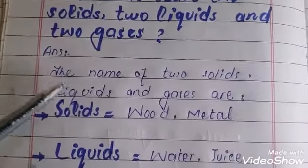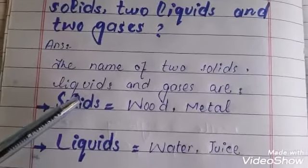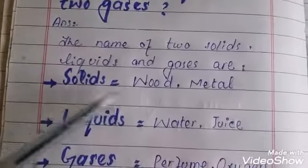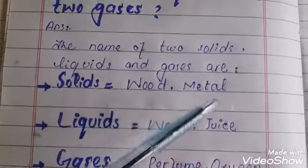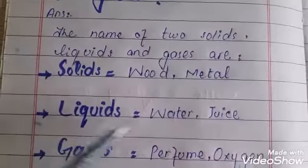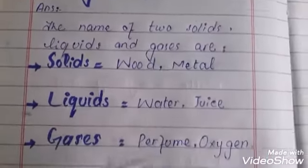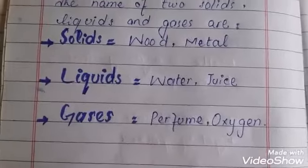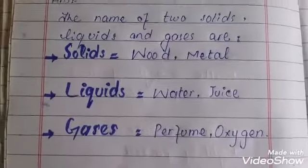Question number two: name at least two solids, two liquids, and two gases. Answer: Two solids — wood and metal. Two liquids — water and juice. Two gases — perfume and oxygen. Thank you.